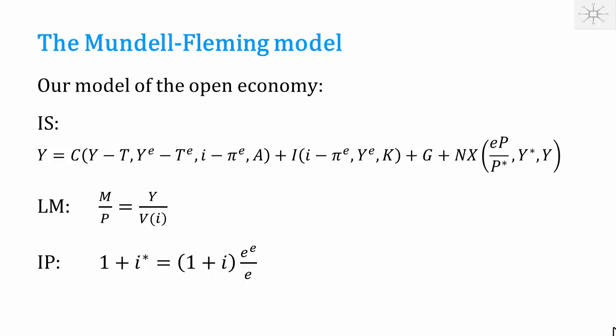That means that production is endogenously determined. In the short run, production is determined by demand, which consists of consumption, investment, government demand, and net exports.